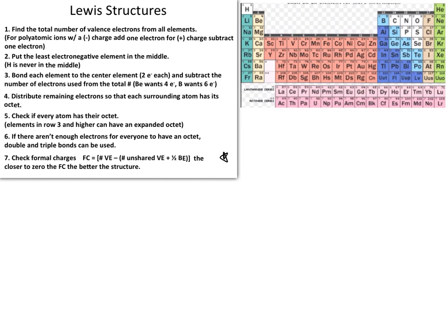The periodic table will allow you to establish things such as position in the table, number of valence electrons, and things of that sort. The use of these two tools will allow you to effectively create Lewis structures. Let's go ahead and do a practice problem to prepare ourselves for drawing Lewis structures.